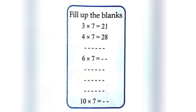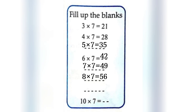Fill up the blanks. 3 into 7 equals 21. 4 into 7 equals 28. 5 into 7 equals 35. 6 into 7 equals 42. 7 into 7 equals 49. 8 into 7 equals 56. 9 into 7 equals 63. 10 into 7 equals 70.